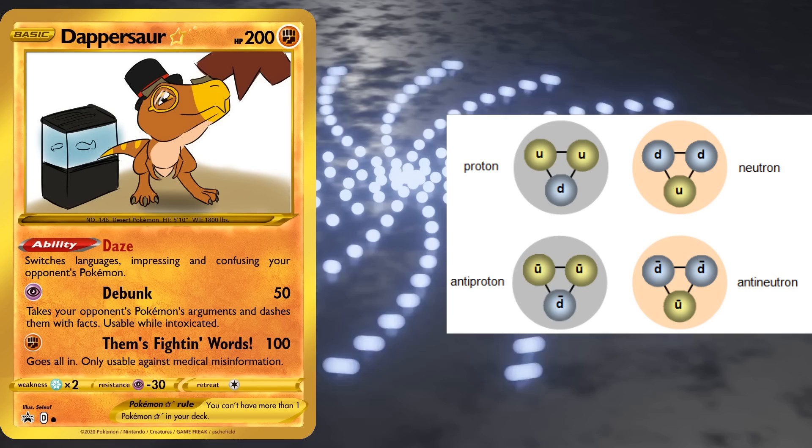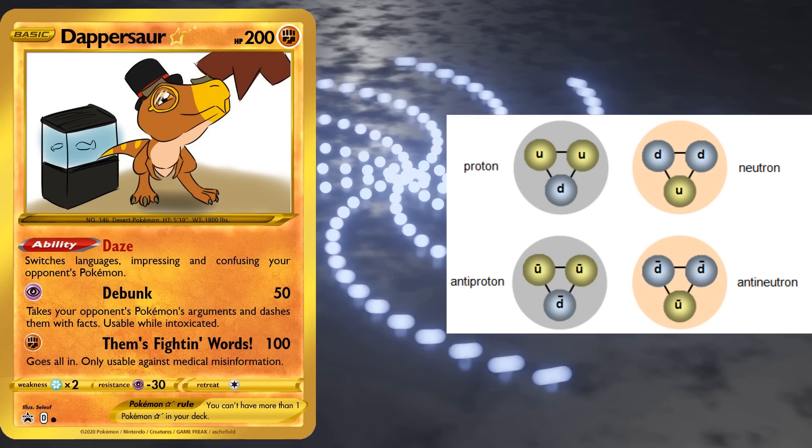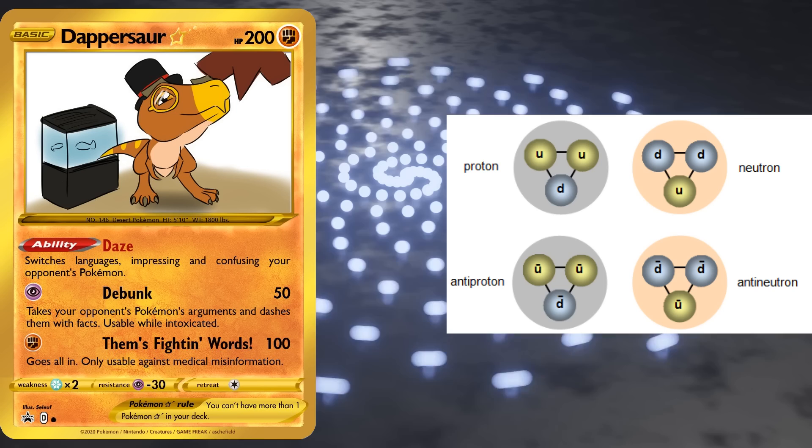Protons aren't made up of electrons, or they'd have a negative charge. Instead, they're made up of two up quarks which themselves have a charge of plus two thirds, and a down quark which has a charge of negative one third, giving a total charge of positive one. Because remember kids, electric charge is a conserved quantity. You can't simply pretend it doesn't exist. And if you add 1800 electrons to something, you can't just ignore all the negative charge that each one adds.